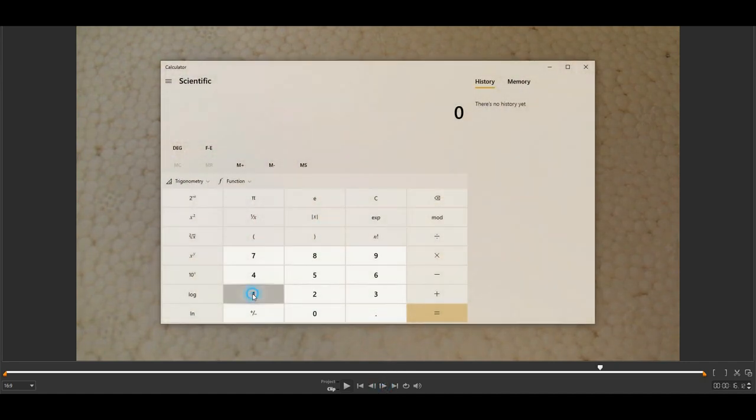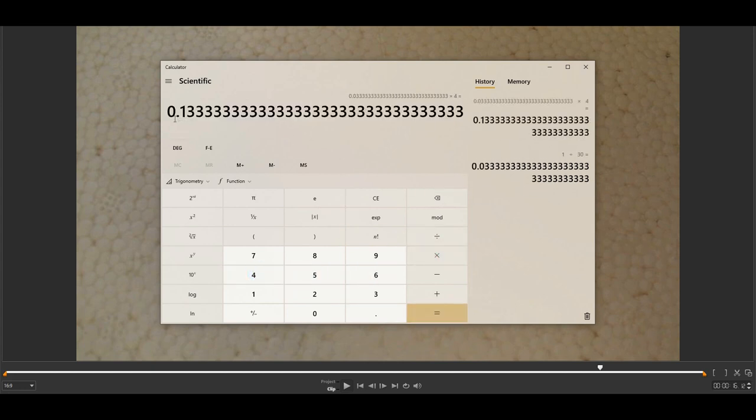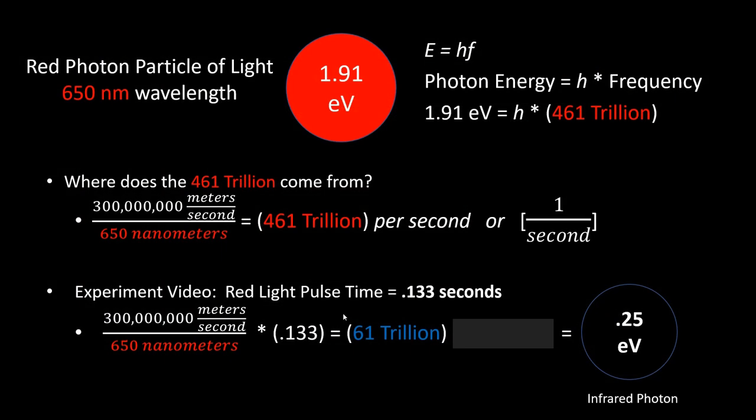Let's flash the red laser pointer really fast, and then we can count the number of video frames that that laser pulse lasted. One, two, three, four. The video records at 30 frames per second, so each frame lasts 0.033 seconds, and we had four of those frames. So basically that laser pulse was 0.133 seconds long. We're modifying the one second down to 0.133 seconds, and when you plug it into this equation, you only get 61 trillion instead of the needed 461 trillion, and then you don't have enough energy to create a red photon.